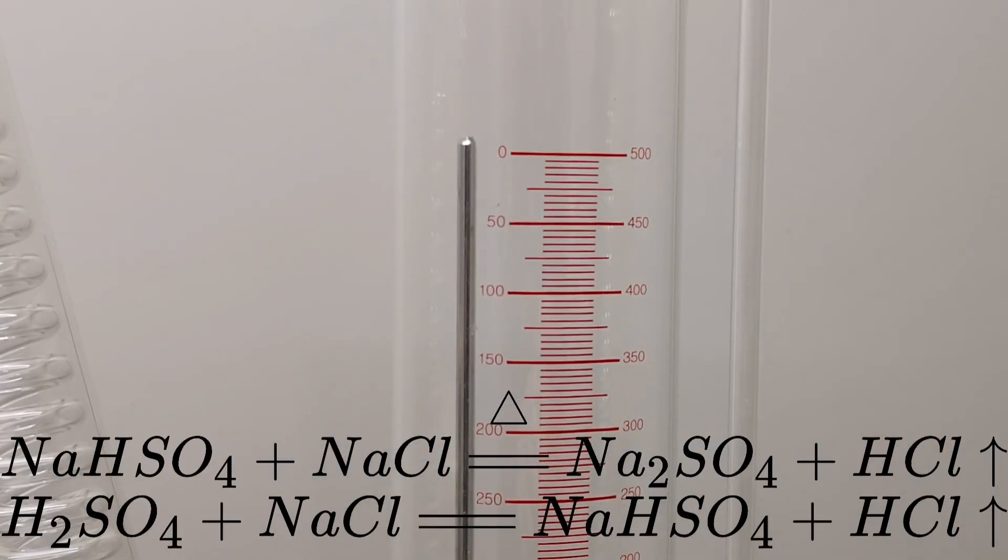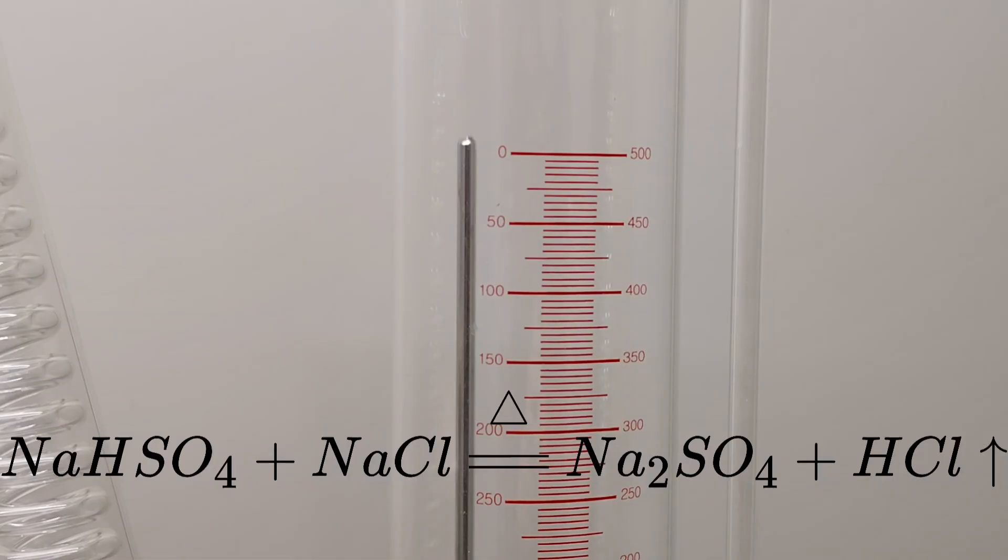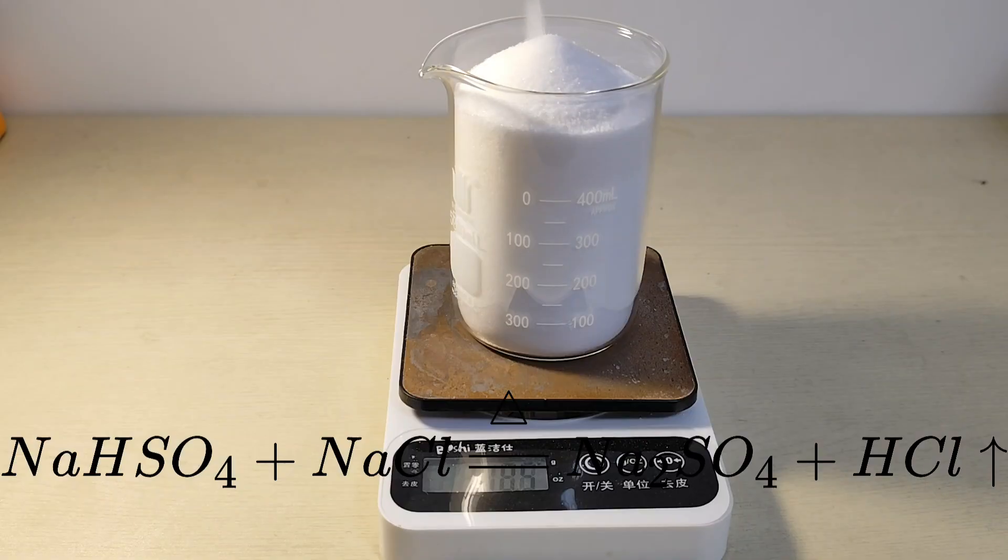My dropping funnel here can store about 500 milliliters of sulfuric acid. According to the second equation and 30% excess acid, I weighed about 820 grams of sodium chloride.